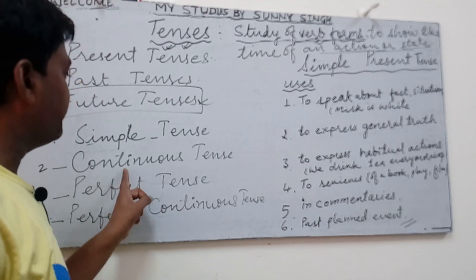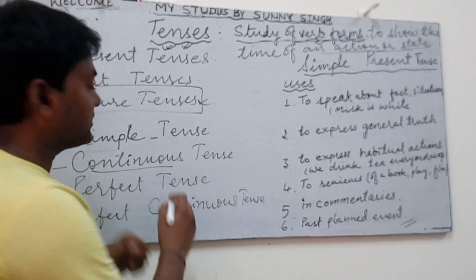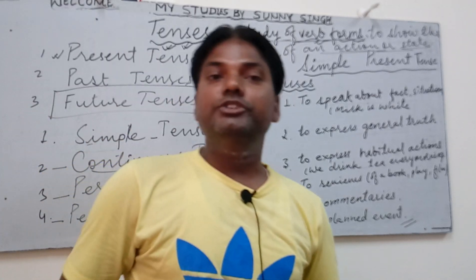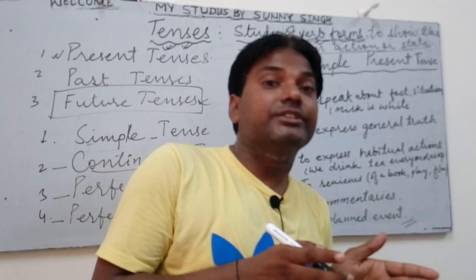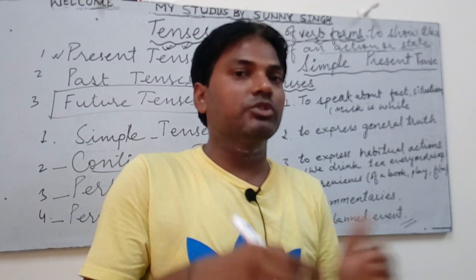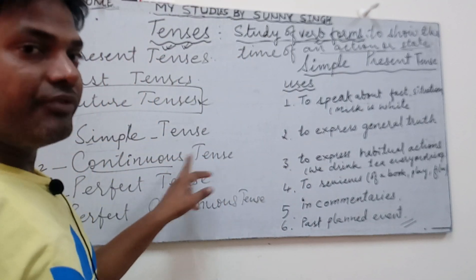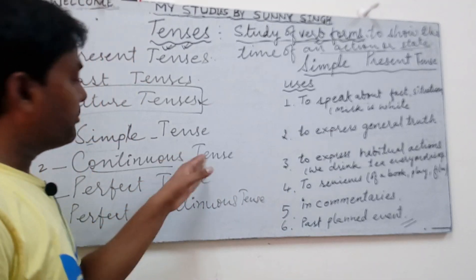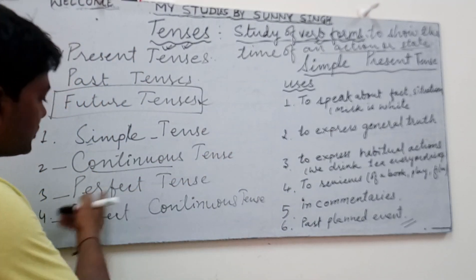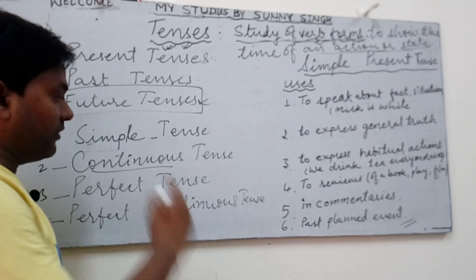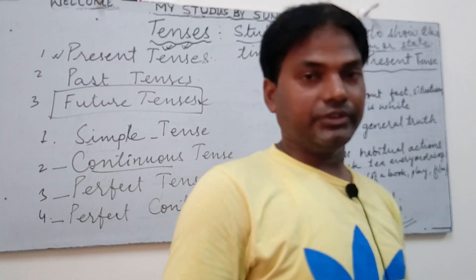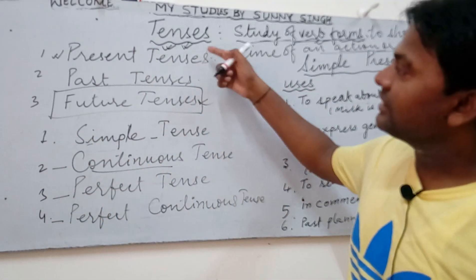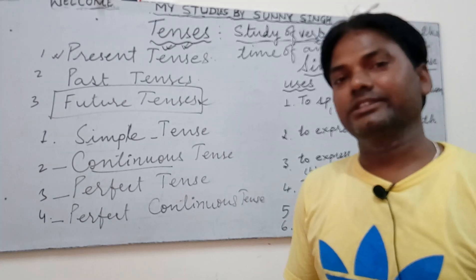In continuous tenses, some books describe them as progressive tenses — continuous is also called progressive. Continuous is also called imperfect, meaning 'not perfect.' So imperfect tenses are another name for continuous tenses. Perfect tenses are always called perfect, and perfect continuous is always called perfect continuous tenses.